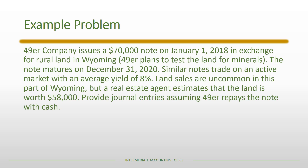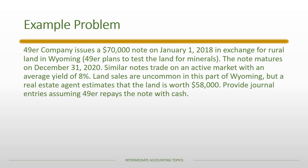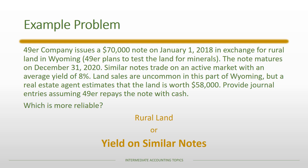Now for a second example. 49er Company issues a $70,000 note on January 1st, 2018, in exchange for rural land in Wyoming that will be tested for minerals. The note matures December 31st, 2020. Similar notes trade with an average yield of 8%. Land sales are uncommon in this part of Wyoming, but a real estate agent estimates the land is worth $58,000. Which is more reliable — the rural land or the yield on similar notes? The rural land has no active market for similar items; it is a unique item, making it a Level 3 fair value. The yield on similar notes is a Level 2.